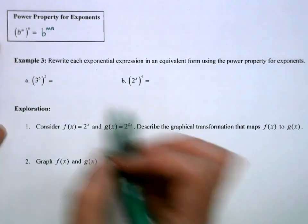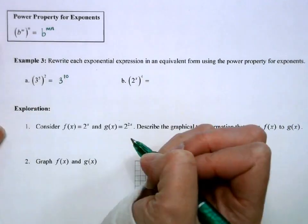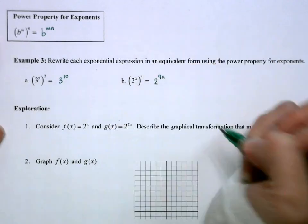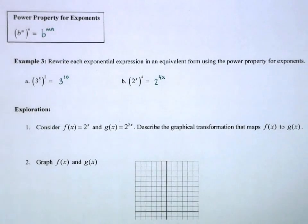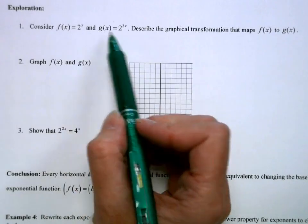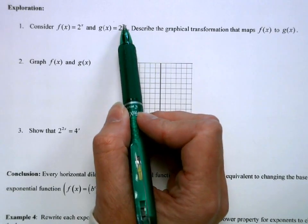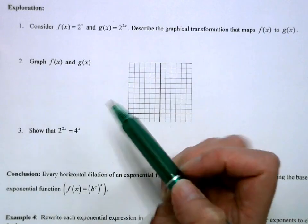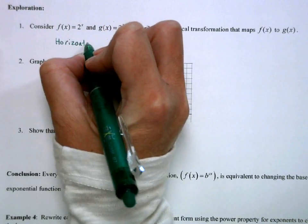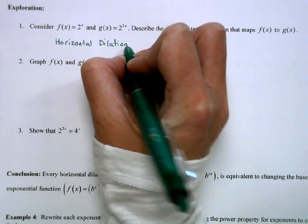So I'm going to use that here. So 3 to the 5th squared would be 3 to the 10th. 2x to the 4th would be 2 to the 4x. And we're going to run a similar exploration. So we've got f of x is still 2 to the x, and then we have 2 to the 2x. Well, if I multiply the x by some factor, that's going to be a horizontal dilation. This one's going to be a horizontal dilation by a factor of 1/2.